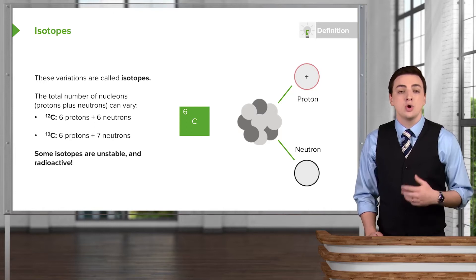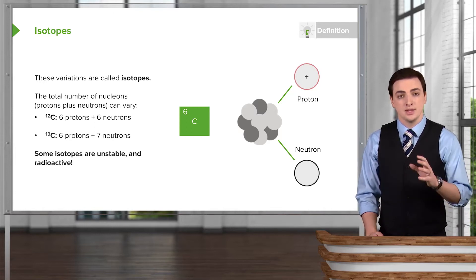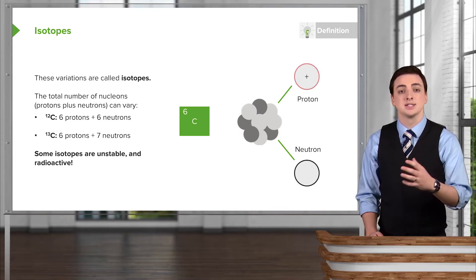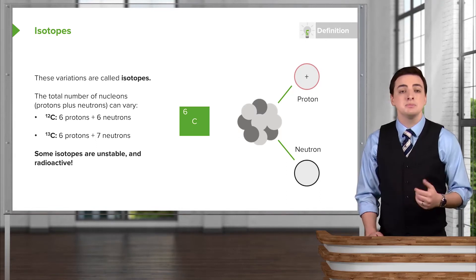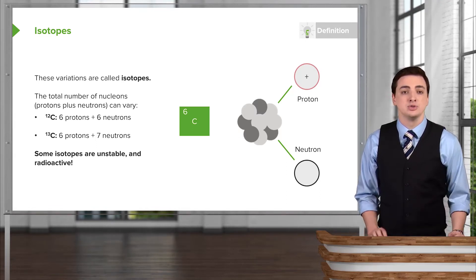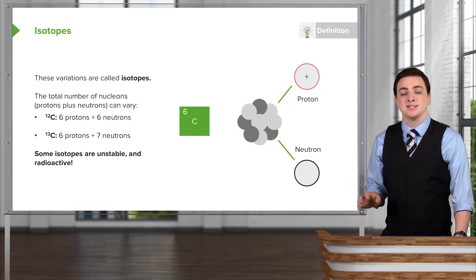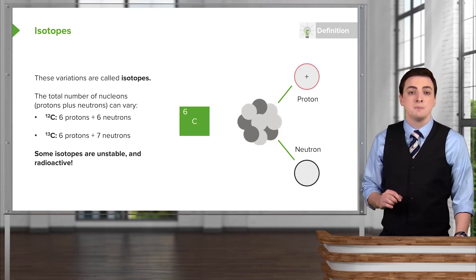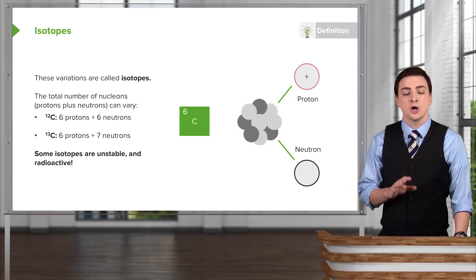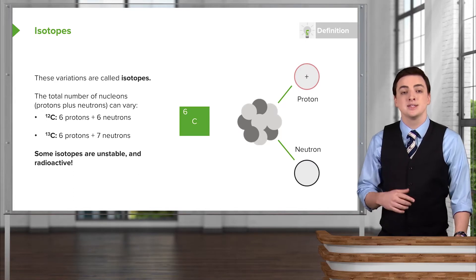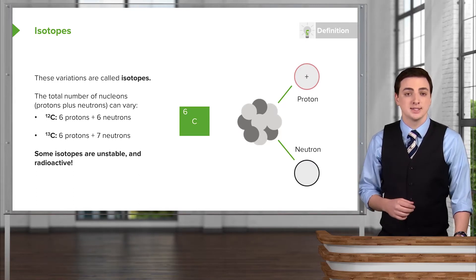We can always find the total number of nucleons, or the things in the nucleus, which includes protons as well as neutrons, by simply adding the number of protons and neutrons. So for example, if we had six protons and six neutrons, we would refer to this element as carbon-12, which means that there are 12 total nucleons in the carbon.